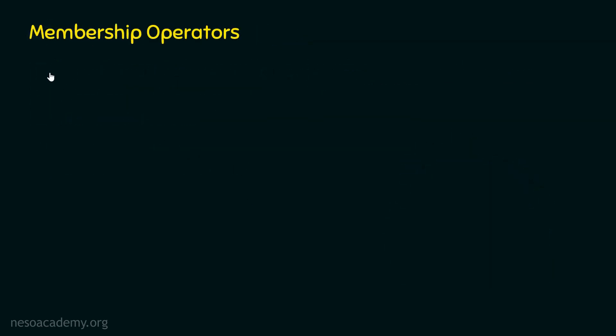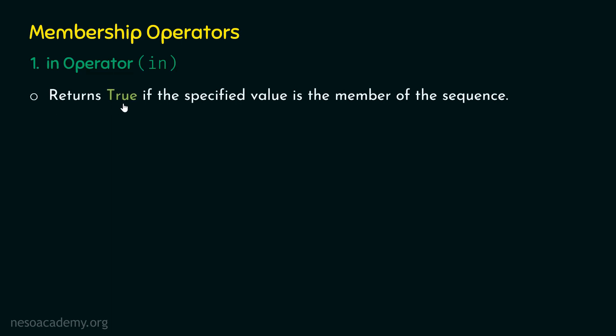The first operator that we need to understand is the In Operator. The In Operator returns true if the specified value is a member of the sequence. If the specified value is not a member of the sequence, then the In Operator returns false. Let's consider one example to understand this better.